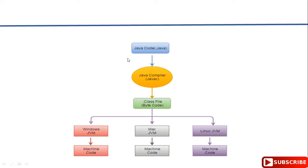Let's summarize what we have discussed. When we have a source file in Java, the Java compiler does not convert it directly into machine-understandable language. Instead, the Java compiler converts the source code into bytecode. It is then the responsibility of the respective platform's JVM to convert this bytecode into that platform's machine-understandable language. When we run this .class file on Windows JVM, Linux JVM, or Mac JVM, each JVM handles the conversion for its own platform. I hope this clears up how Java achieves platform independence.